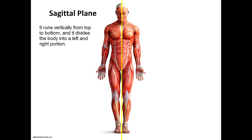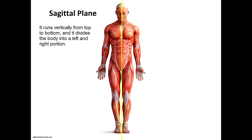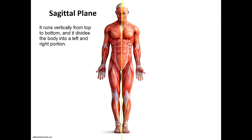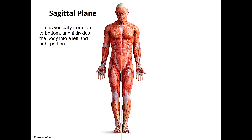First, let's talk about sagittal planes. A sagittal plane runs vertically from top to bottom, and it divides the body into a left and right portion. This is easy to remember because on your skull you have what's called a sagittal suture, which divides it into left and right sides — and that's exactly what this plane does. It divides the body into right and left sides when viewed from the anatomical position.